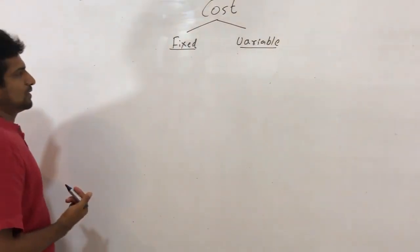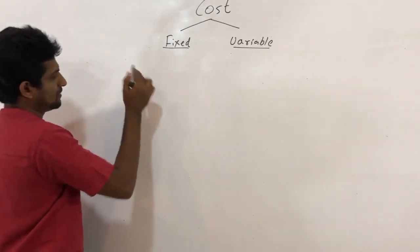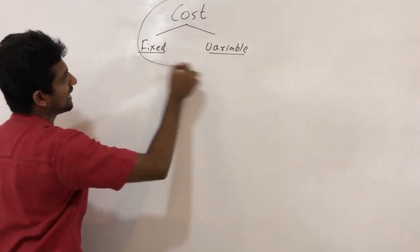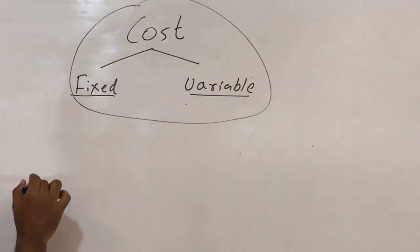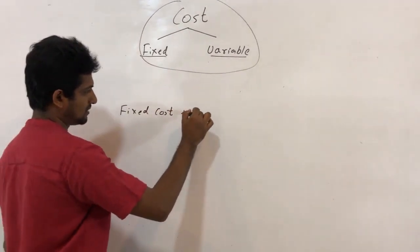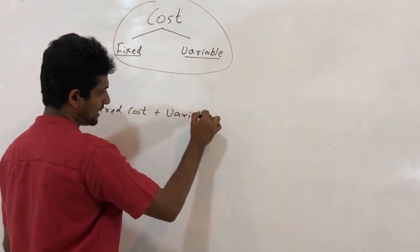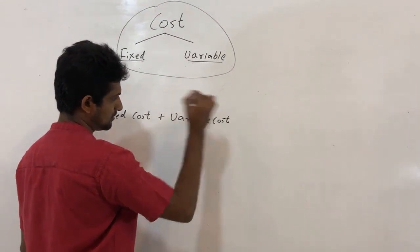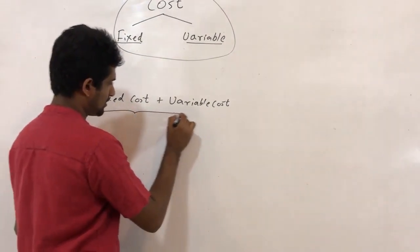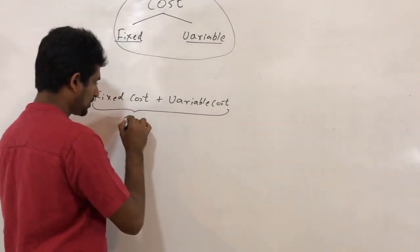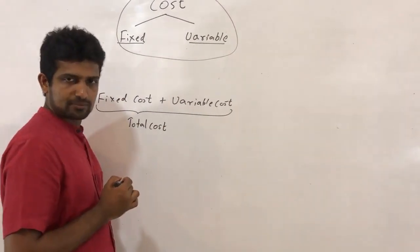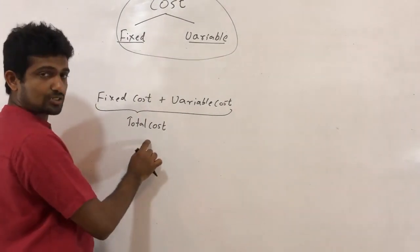When you take the cost of a business, according to this relationship, fixed cost plus variable cost equals total cost. Fixed cost plus variable cost is the total cost.